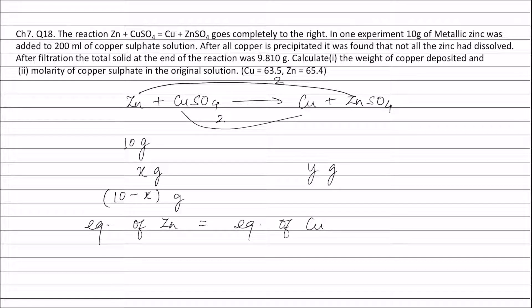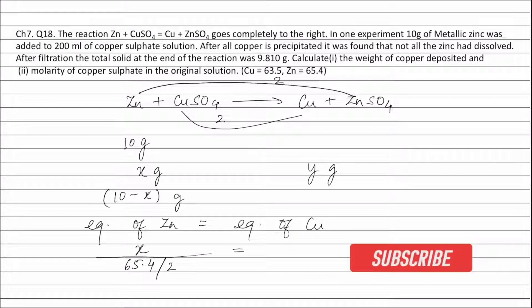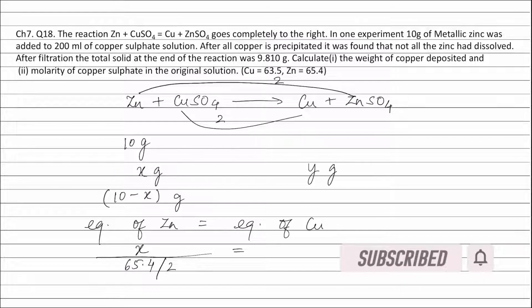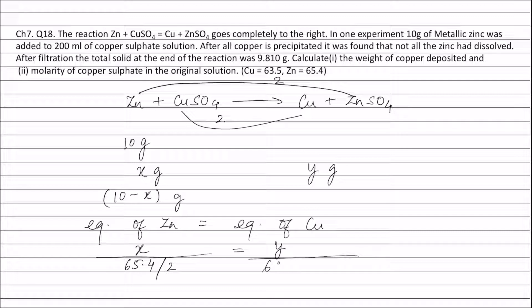Equivalence of zinc equals weight of zinc (x grams) divided by equivalent weight of zinc. The equivalent weight of zinc equals atomic weight of zinc (65.4) divided by valency factor of zinc (2). Equivalence of copper equals weight of copper (y grams) divided by equivalent weight of copper. The equivalent weight of copper equals atomic weight of copper (63.5) divided by valency factor of copper (2). This gives: x divided by 65.4 equals y divided by 63.5.